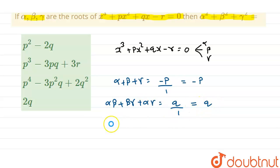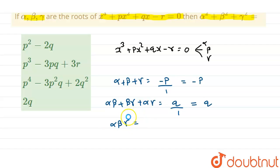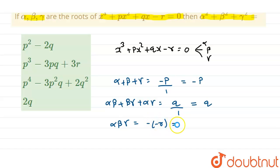Now we will write the product of the roots. The product alpha·beta·gamma equals minus of the constant term. The constant term is minus r, so minus of minus r gives us r.